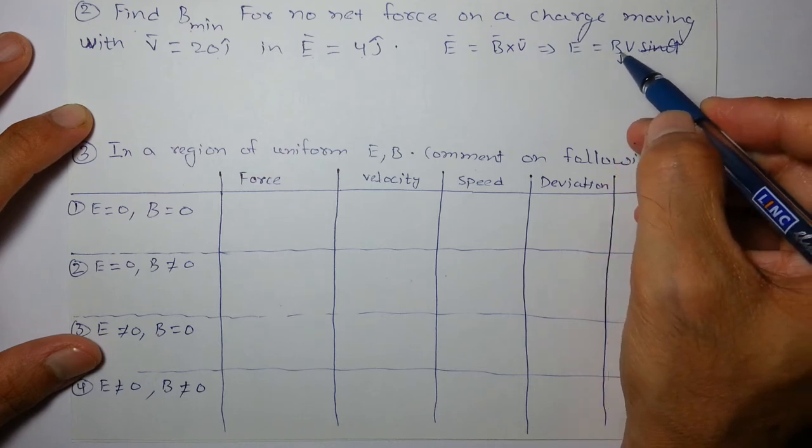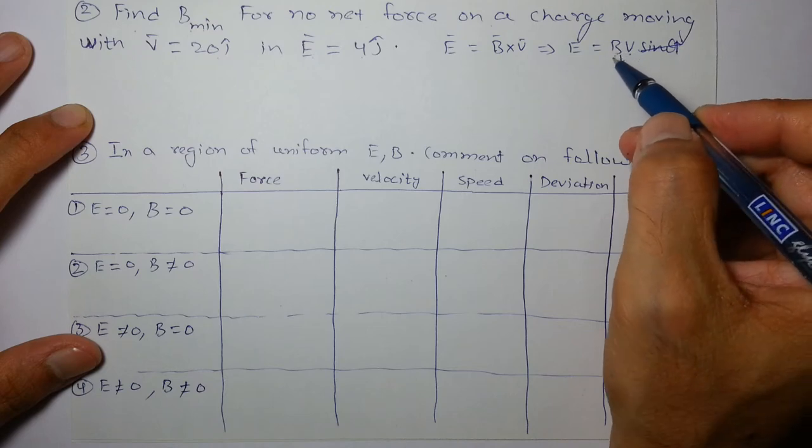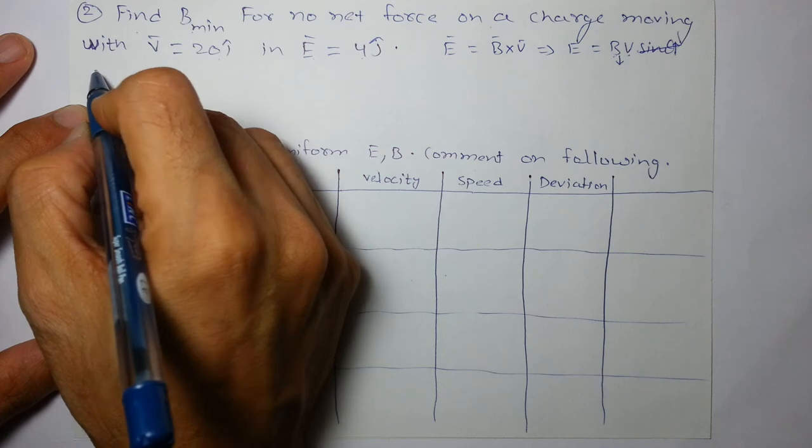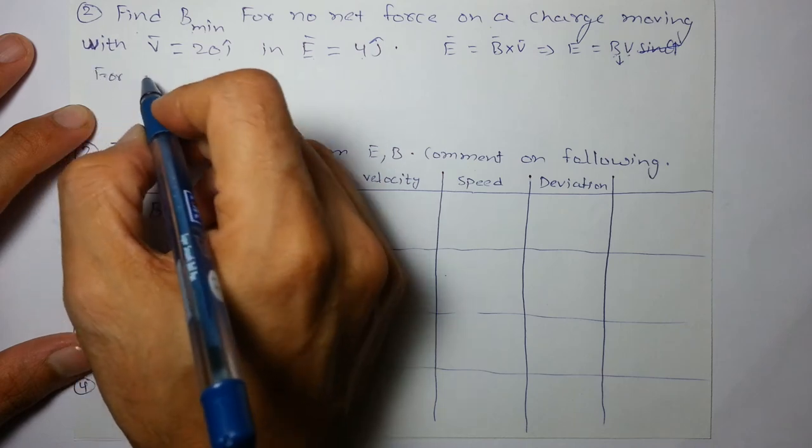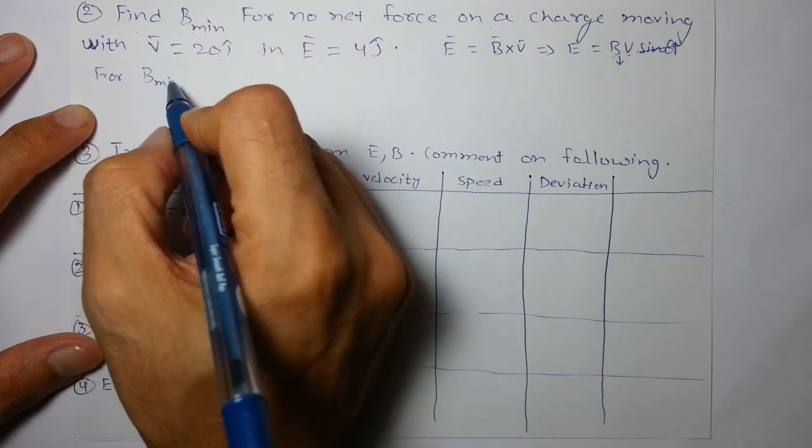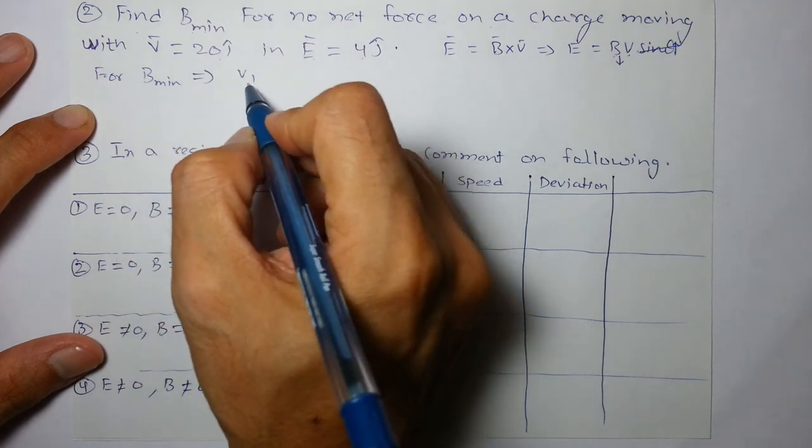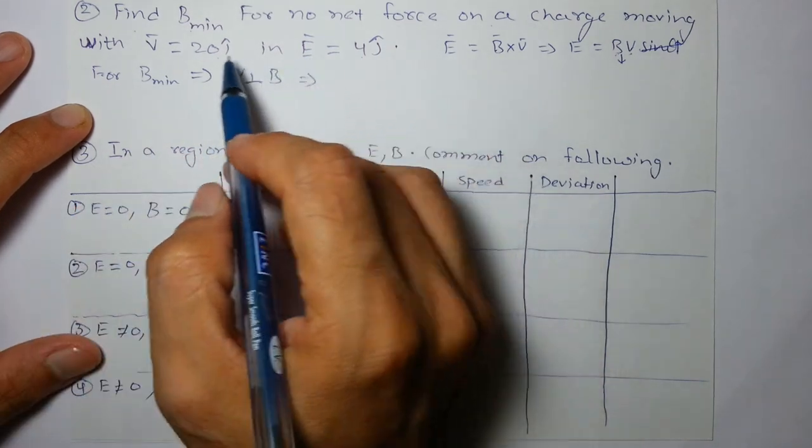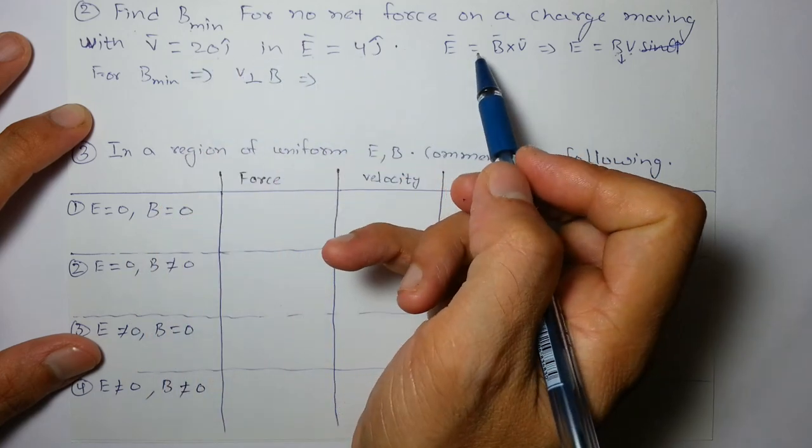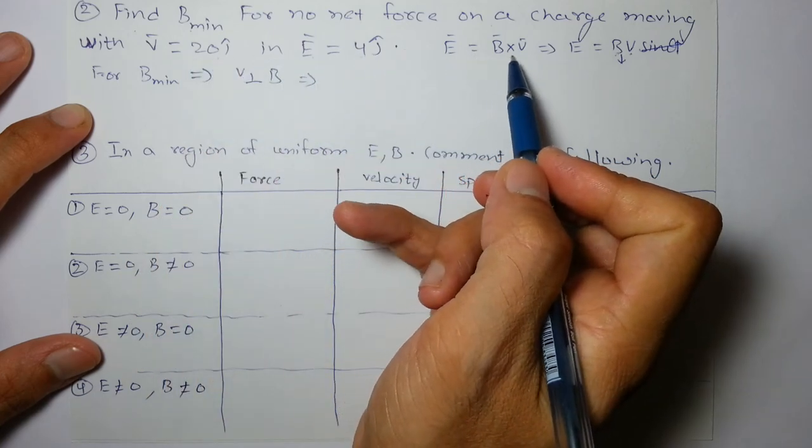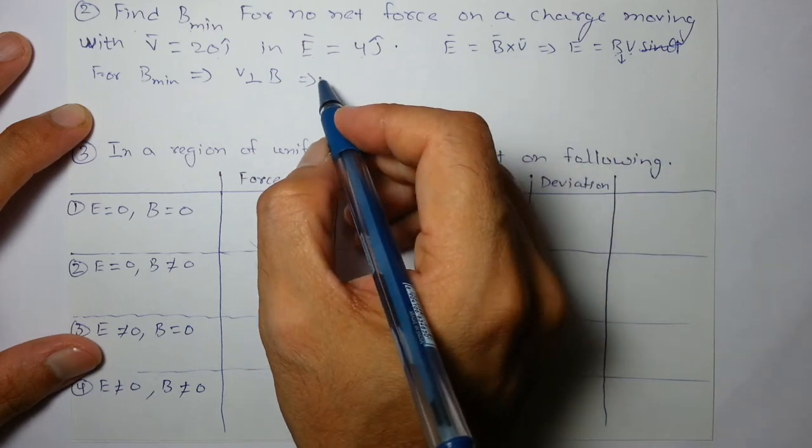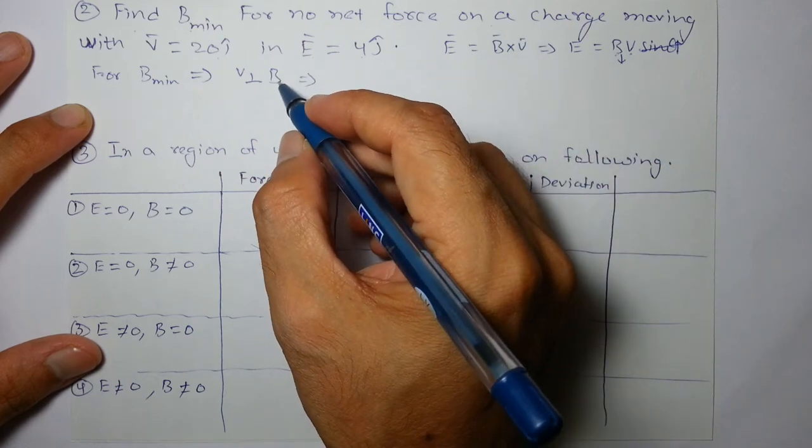So B must be perpendicular to V for B to be minimum. That is the condition for B minimum. V is perpendicular to B. Obviously, E will be perpendicular to both. E is perpendicular to both B as well as V because it is coming from the cross product.